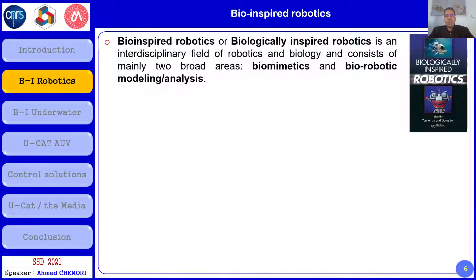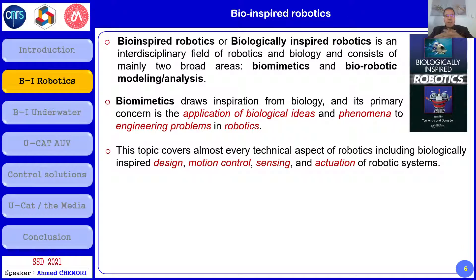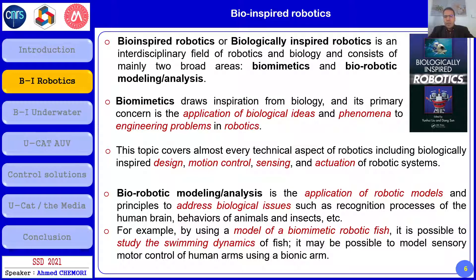Concerning bio-inspired robotics, a basic definition is that it is a field of research between robotics and biology, including two broad areas: biomimetics and biorobotics modeling and analysis. Biomimetics is the idea of resolving engineering problems in robotics based on biological ideas, covering design, motion control, sensing, actuation, and so on. Biorobotic modeling and analysis concerns the application of robotic models to address biological issues, for example using a robotic fish model to study the swimming dynamics of real fish.